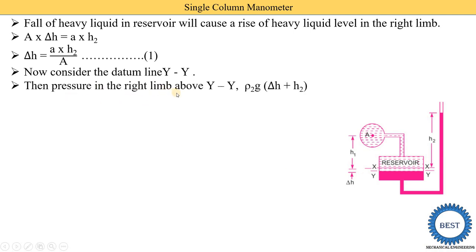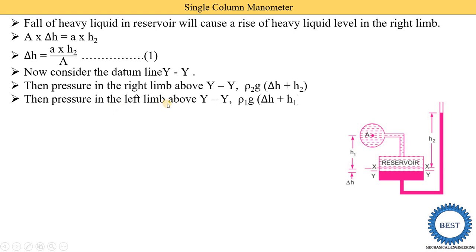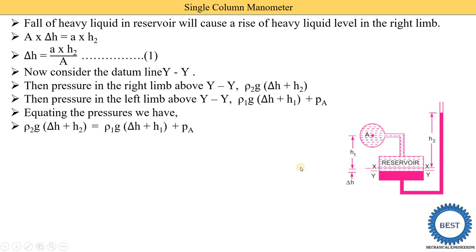The pressure in the right limb about Y-Y is rho2 × g × (H2 + delta H). The pressure in the left limb about Y-Y is rho1 × g × (delta H + H1) plus PA. Equating these pressures: rho2 × g × (H2 + delta H) = rho1 × g × (delta H + H1) + PA.